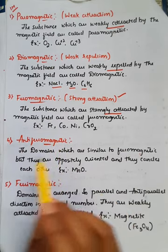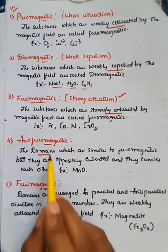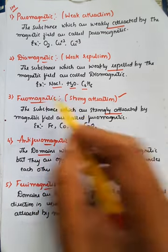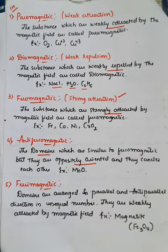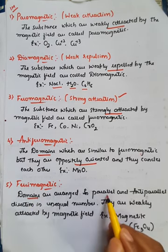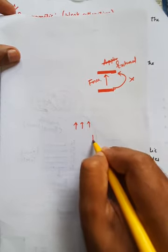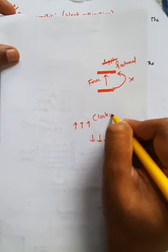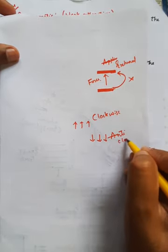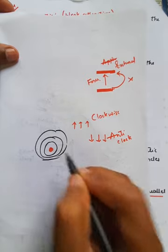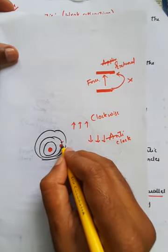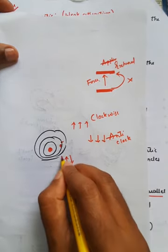In antiferromagnetic substances, the domains are similar to ferromagnetic but are oppositely oriented — they cancel each other. These are called antiferromagnetic. In ferrimagnetic substances, the domains are arranged in parallel and anti-parallel directions. The arrow marks represent clockwise and anti-clockwise spinning — an upward arrow is clockwise spinning and a downward arrow is anti-clockwise spinning. These arrangements are the domains, and on the basis of these we can classify into paramagnetic, diamagnetic, ferromagnetic, antiferromagnetic, and ferrimagnetic.